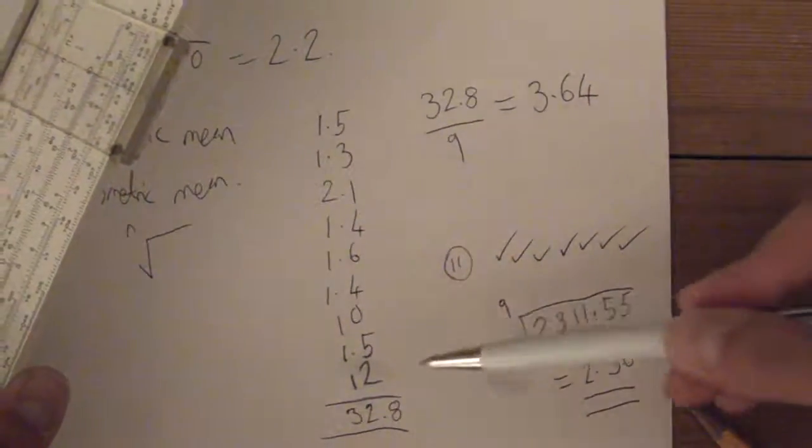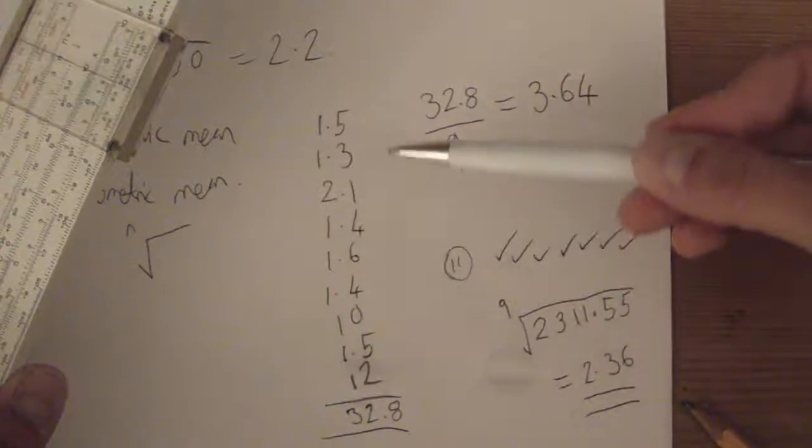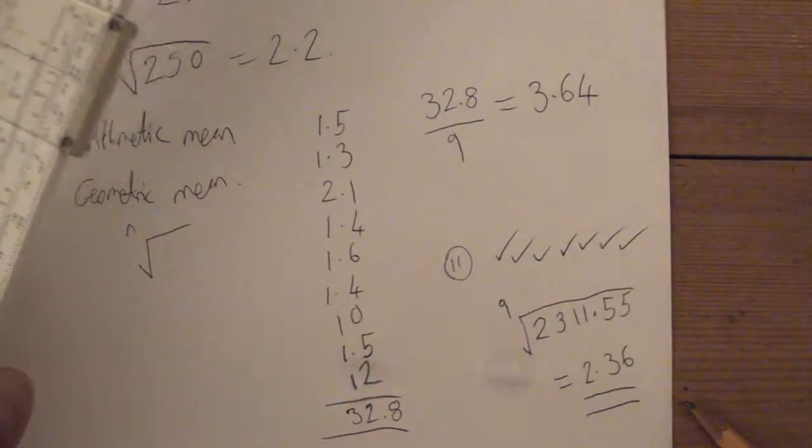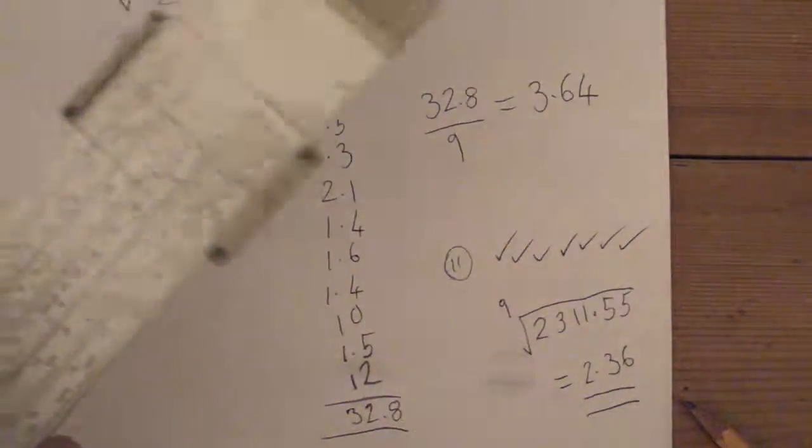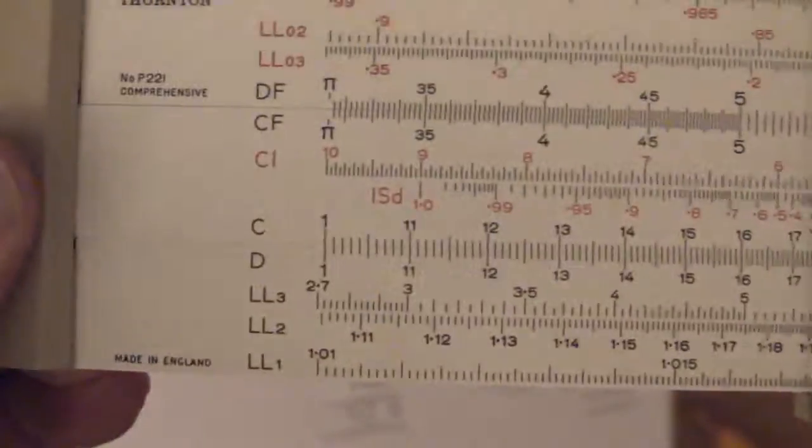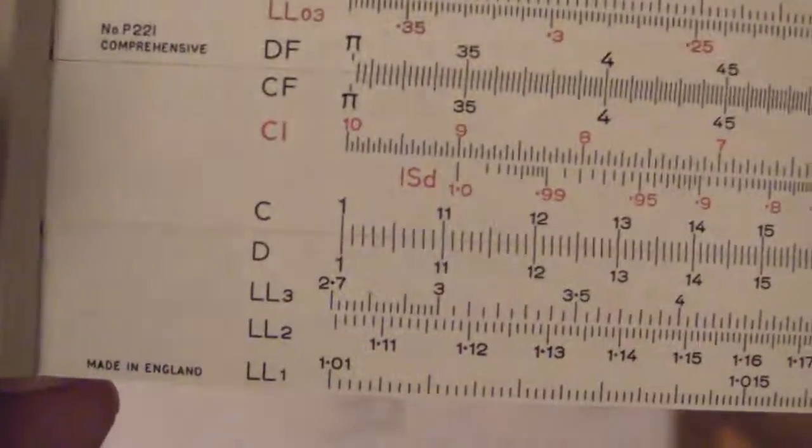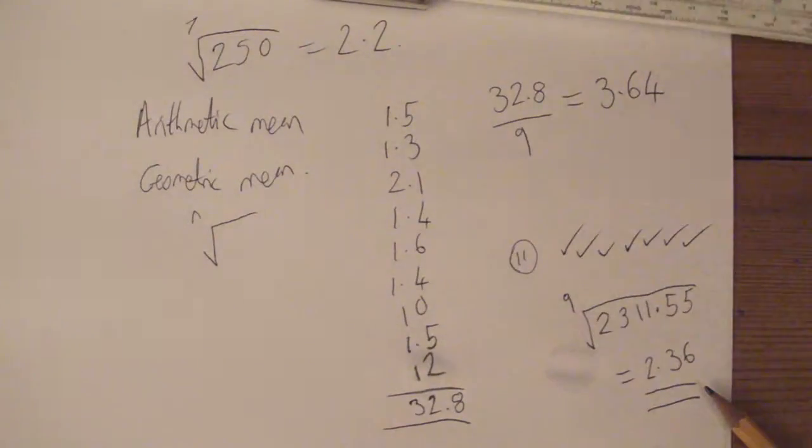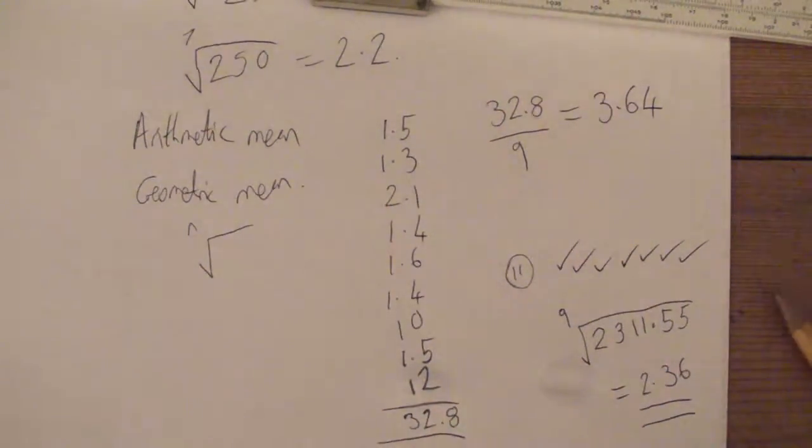geometric mean 2.36 the arithmetic mean 3.64, so you can see that 2.36 is much closer to the modal value of that data set and it's kind of smoothed out the effect of having that 10 and the 12 in the data set. so there you go very quick overview of those scales how you can use them to raise a number by a power and also find the nth root of a number and how you can use it to calculate the geometric mean. sorry if that was a bit hasty. if you like what you saw please leave a comment if you didn't like it don't say anything because I'm very sensitive. please have a look at my other slide rule videos and ask any questions you'd like to thank you.